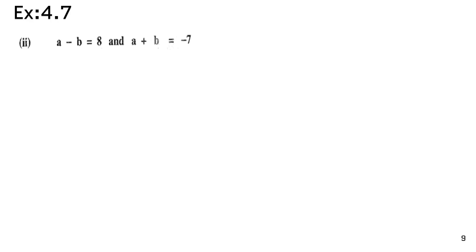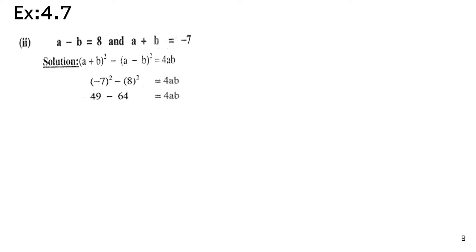Part 2: a - b = 8 and a + b = -7. Using (a + b)² - (a - b)² = 4ab. Putting values: (-7)² - (8)² = 4ab, so 49 - 64 = 4ab. Therefore 4ab = -15.